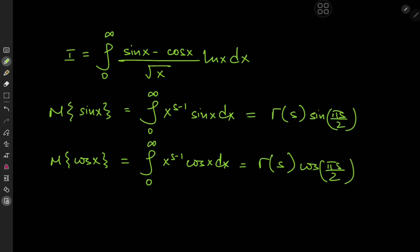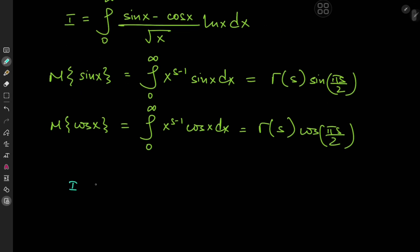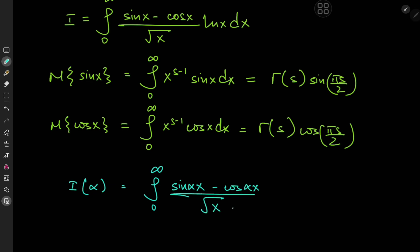Now we could just take these tools and apply various tricks to get a solution for the target integral. Or I could show you something really cool that I figured out later — once I actually solved the target integral, I realized we can generalize this for some interesting results. We define the integral as a function i(alpha), the integral from 0 to infinity of sine(alpha*x) minus cosine(alpha*x) divided by root x times log x dx, where alpha is a positive real number.